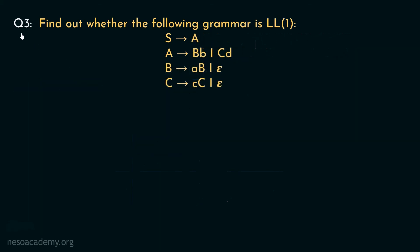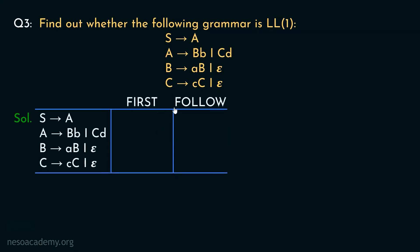Let's now move on to the next question. This grammar has four non-terminals, so let's begin finding the firsts and follows. For C: C can be rewritten as small c followed by capital C, or epsilon — so in the first of C we include small c and epsilon. For B: B can be rewritten as small a followed by capital B, or epsilon — so in the first of B we include small a and epsilon.